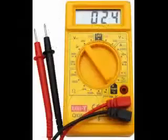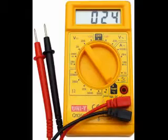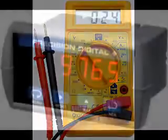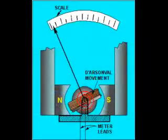Though modern digital meters have no moving parts, the term movement may be applied to the same basic device performing the display function. The design of digital movements is beyond the scope of this chapter, but mechanical meter movement designs are very understandable.